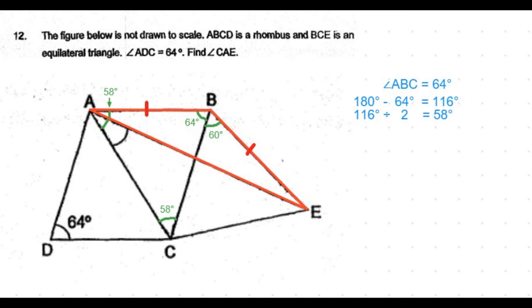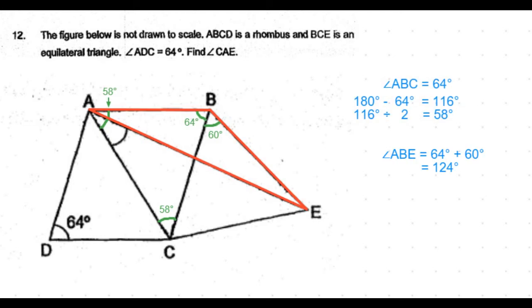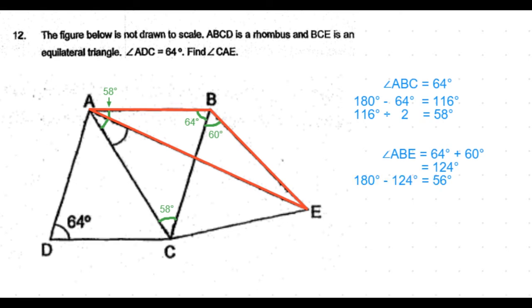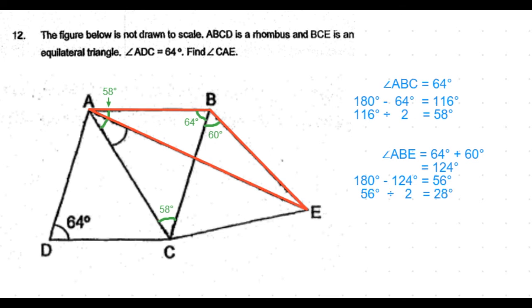We know the angle at B as a sum of 64 and 60 degrees, which is 124 degrees. So the other two angles, which are equal, are 180 minus 124 degrees, which is 56 degrees. Half of that is 28 degrees each.